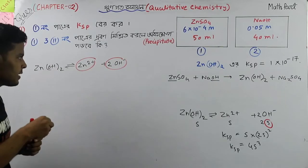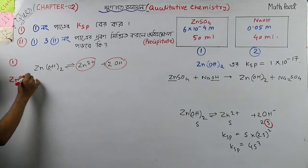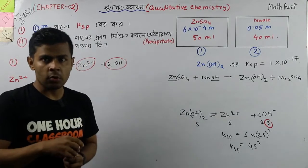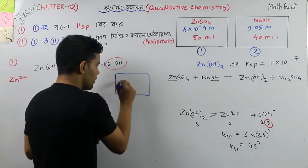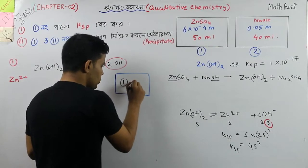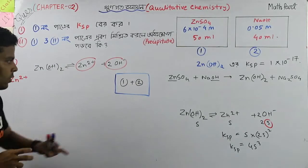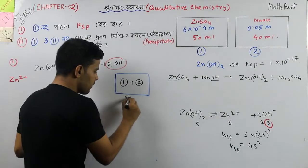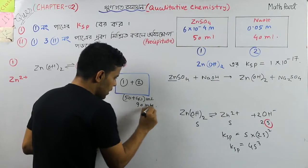How does zinc 2 plus and OH minus work? As we do, we need zinc 2 plus. What do we have to do? We have to be minus. Is there a negative problem right now? We have to make a negative solution with two negative solutions. So 50 plus 40 ml means 90 ml.